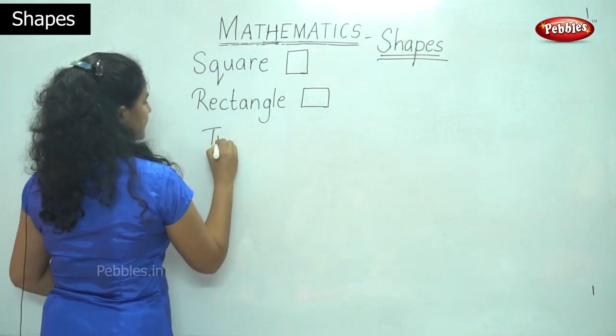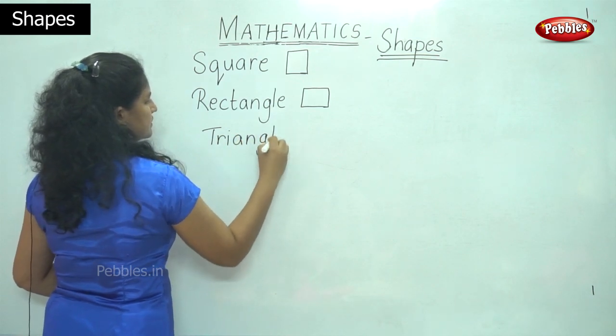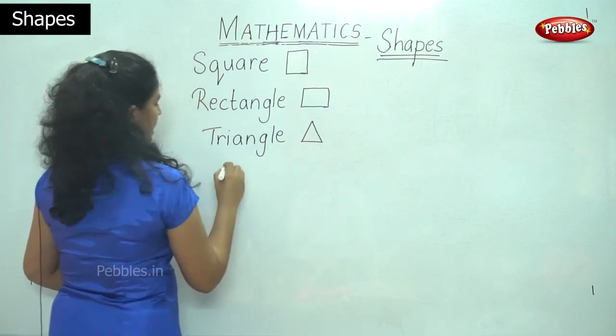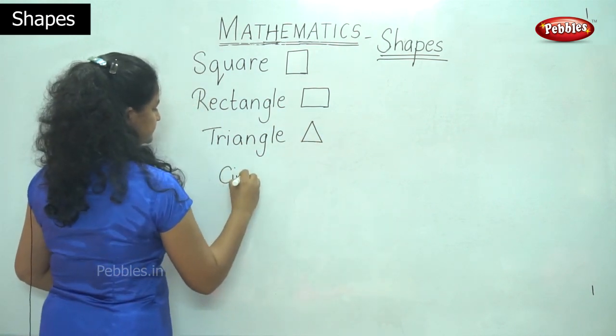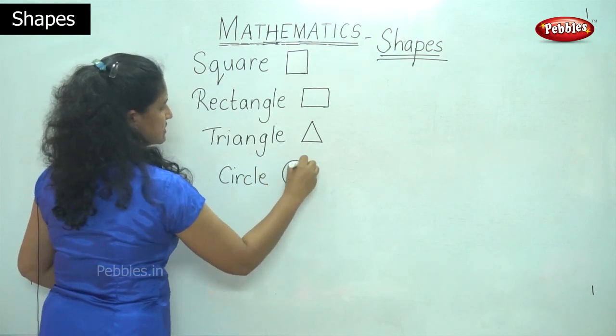Then we have the triangle. The triangle. We have the circle. We have the circle.